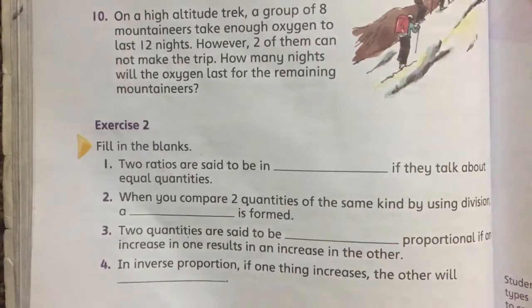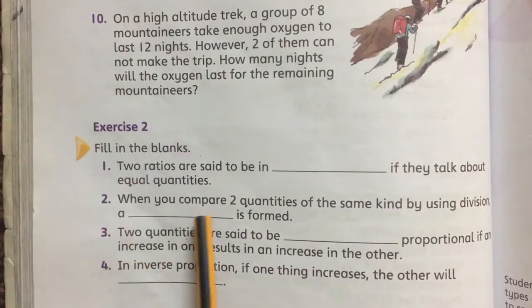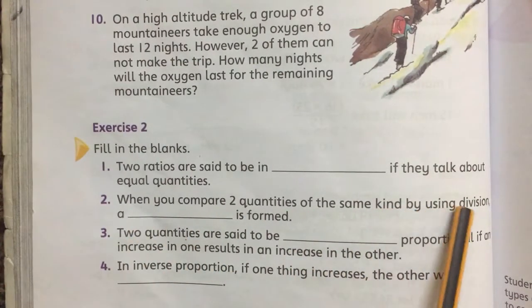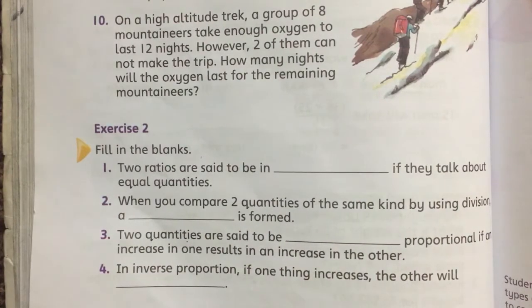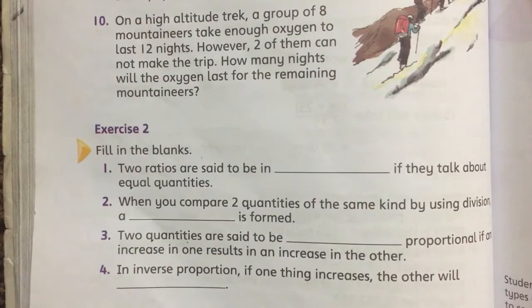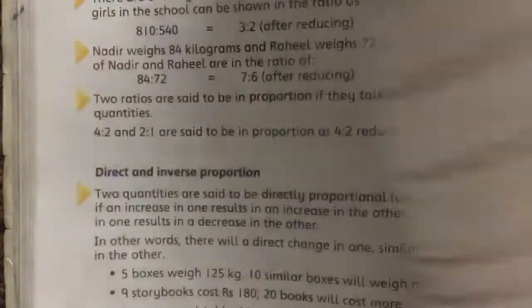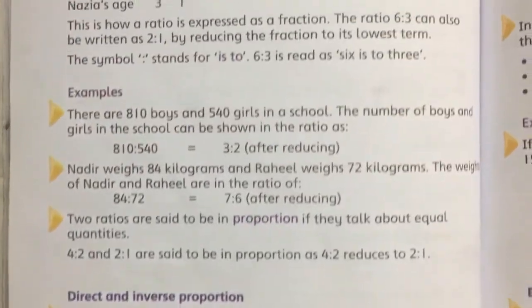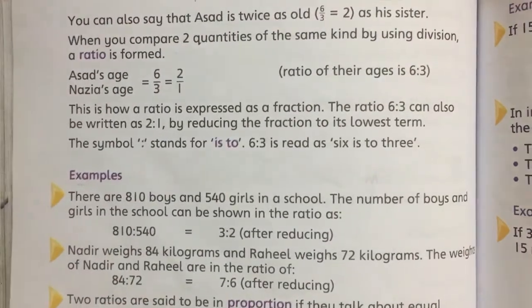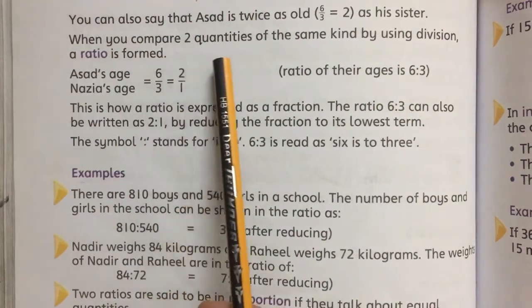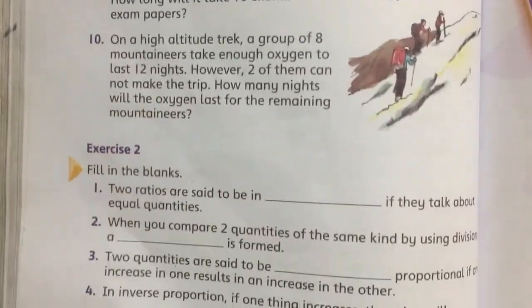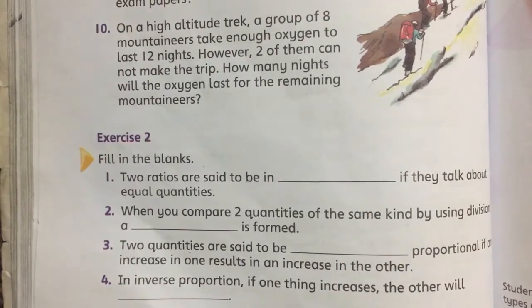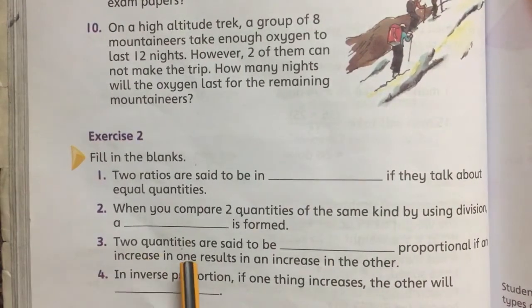Second: when you compare two quantities of the same kind by using division, a ___ is formed. When you compare two quantities of the same kind by using division, a ratio is formed. So the answer is ratio.